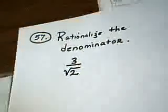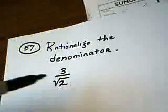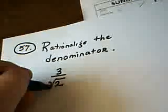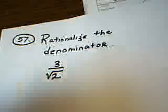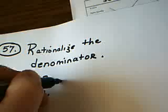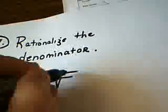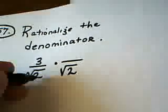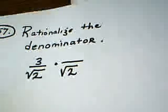Let's go to the problem. What we need to do is we need to make the square root of 2 — this radical — not stay on the bottom of the problem anymore. The technique we're going to use is to multiply the denominator by the square root of 2, because the square root of 2 times the square root of 2 becomes the square root of 4, which is 2.